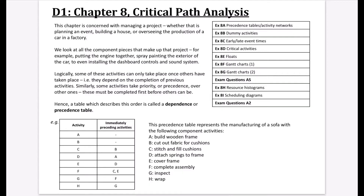Some of these activities can only take place once others have taken place — they depend on the completion of previous activities. Similarly, some activities take priority or precedence over others and must be completed first. A table describing this order is called a dependence table, or most commonly a precedence table.